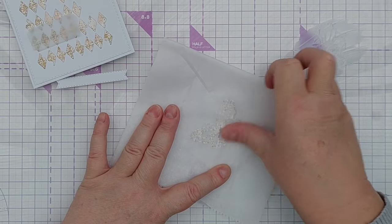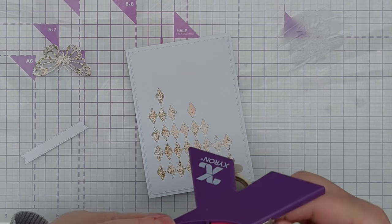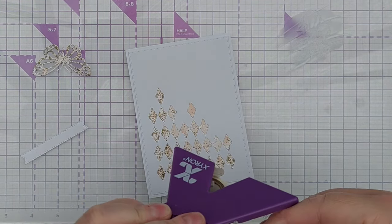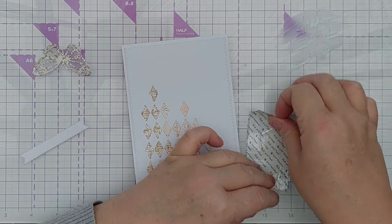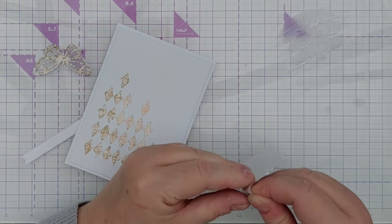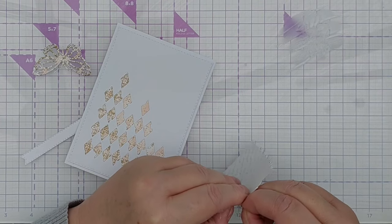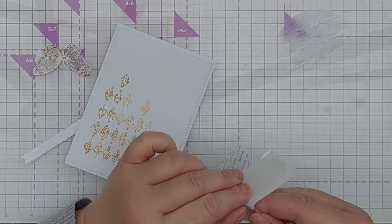I also cut a label shape from vellum and a stitched fishtail banner shape from smooth white card. I ran my vellum label through my Xyron sticker maker and that made the whole of the back of the label sticky, which is one way of adhering vellum without the adhesive showing through. If you make the whole thing adhesive, it just looks like it's meant to be.